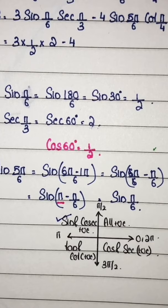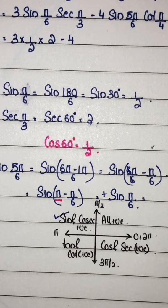180 by 6, that is 30 degree. Sin 30 degree, 1 by 2. 4 into 1 by 2 into next.